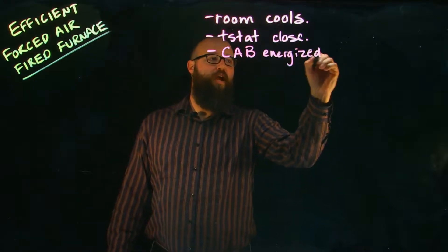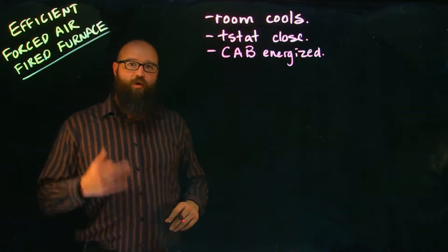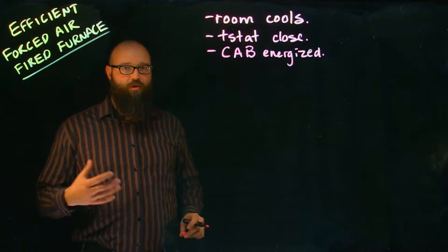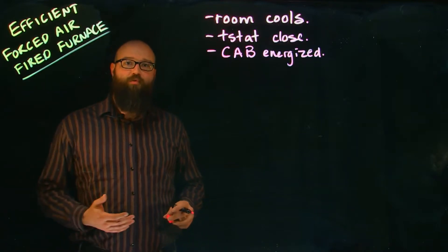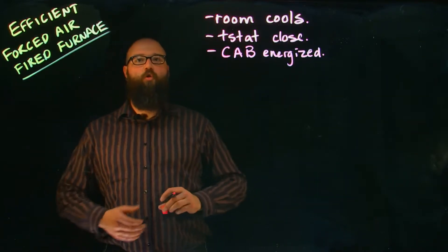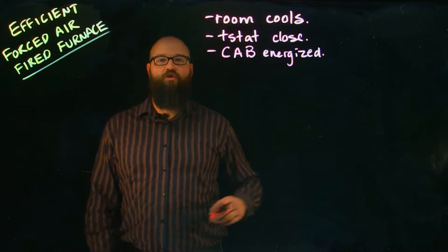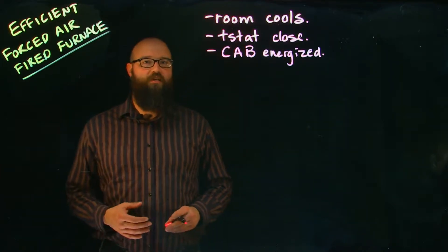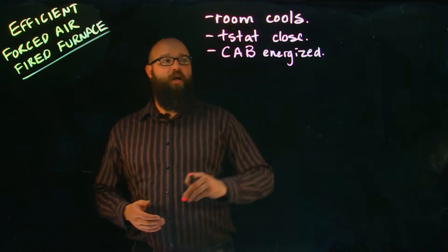The purpose of our combustion air blower is to move those products of combustion across our burners, but it also does a pre-purge where it removes any products of combustion or old gas that might be present in the heat exchanger or the flue itself. Prevents things like explosions. So our CAB is energized.